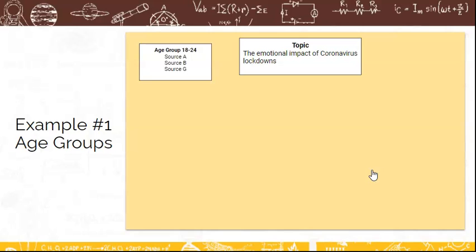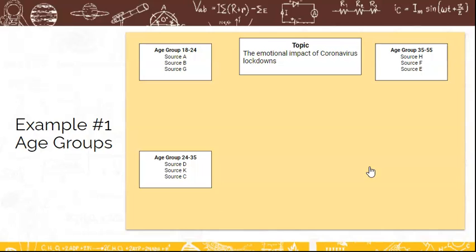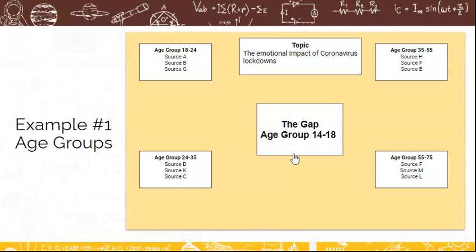Sources A, B and G are looking at age group 18 to 24. Perhaps sources H, F and E are looking at age group 35 to 55. I have another age group ages 24 to 35 with another set of sources, and then another group that's looking at ages 55 to 75. So I have 18 to 24, 35 to 55, 24 to 35 and 55 to 75. What's an obvious gap here? Age group 14 to 18. So I've looked at a range of sources that have communicated about other age groups, and my obvious gap is to say they have not looked at the age group 14 to 18. That might be one option if you're looking at age groups.